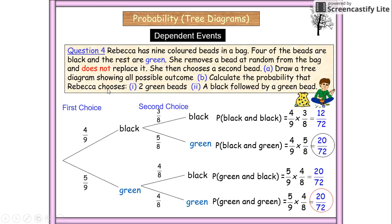To calculate the probability that Rebecca chooses two green beads, there you've got green and green will be 20 over 72, and a black followed by a green, which gives you 20 over 72.